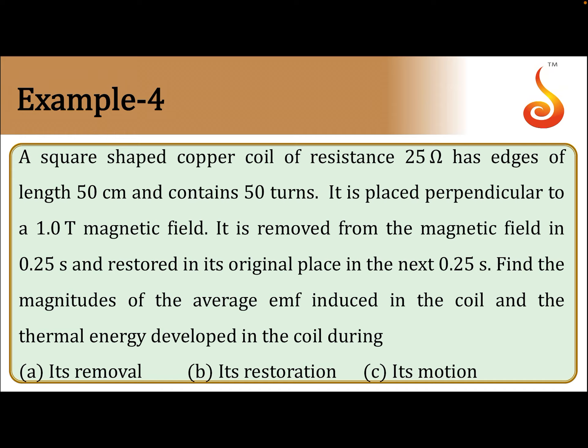So resistance of coil is given, dimensions of coil are given, square coil it is. So 50 centimeter square will be area. Number of turns is 50. Field is 1 tesla. So it is removed from magnetic field in 0.25 seconds and restored in its original place next 0.25 seconds.